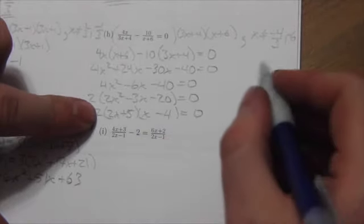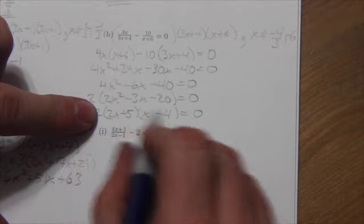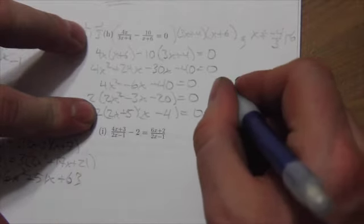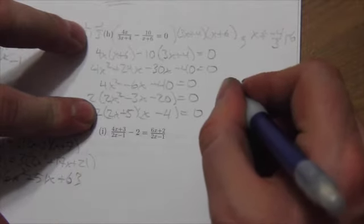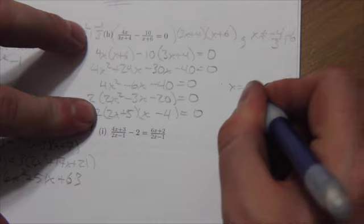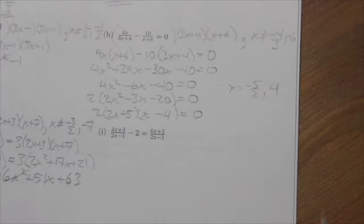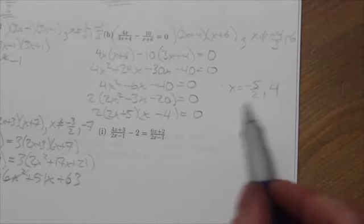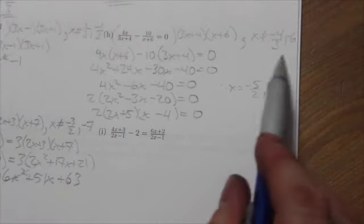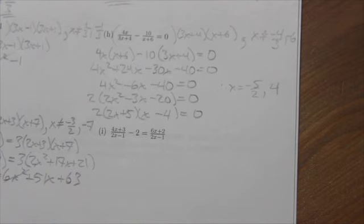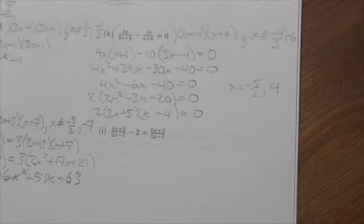Solving the quadratic by finding where each factor equals zero gives x equals negative 5 halves and positive 4. Neither of those matches the non-permissible values, so both answers are valid. The two solutions are negative 5 halves and positive 4.